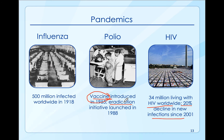The reality is we still have polio in certain parts of the world and we're working on eradicating it. There are examples of diseases that have been completely eradicated through vaccines, and smallpox is one of those.